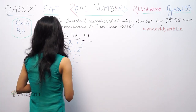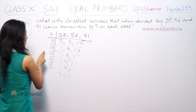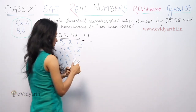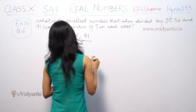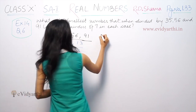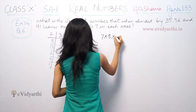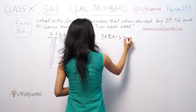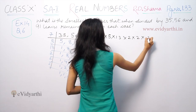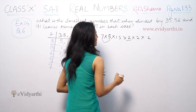So we have 7 × 5 = 35, and then multiplying into 2 × 2 × 2 and into 13. We take 7 × 5 = 35, then 35 × 2 = 70, 70 × 2 = 140, 140 × 2 = 280.